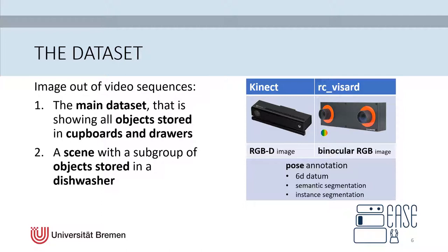Each scene is observed through two cameras. We have the Kinect, which provides RGB-D images. And second, the RC Wizard, which provides binocular RGB images. For each frame, we provide a pose annotation for each object.